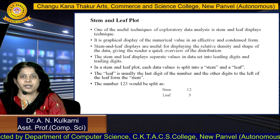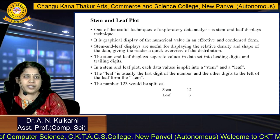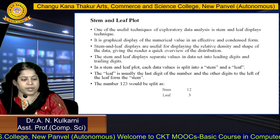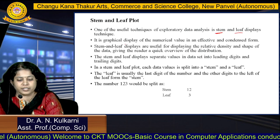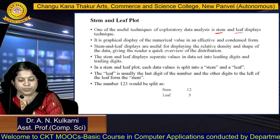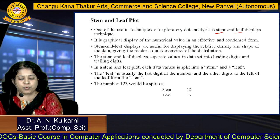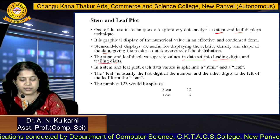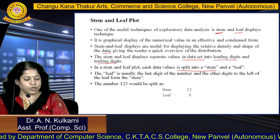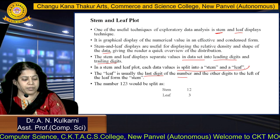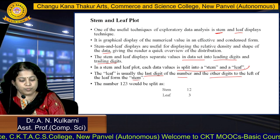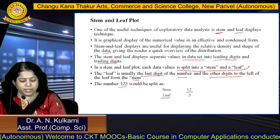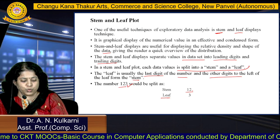Next topic is stem and leaf plot. One of the useful techniques of exploratory data analysis — if you have to present or analyze data, the stem and leaf display technique is used. It is a graphical display of numerical values in an effective and condensed form. Stem and leaf displays are used for showing the relative density and shape of the data. Each data value is split into a stem and a leaf. The leaf is usually the last digit of the number, and the other digits to the left form the stem. For example, for the number 123, the leaf is 3 and the stem is 12.